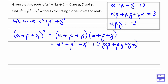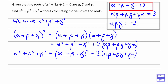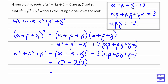And then we can rearrange this to make alpha squared plus beta squared plus gamma squared the subject. So alpha squared plus beta squared plus gamma squared is equal to (alpha plus beta plus gamma) squared, subtract 2 times (alpha-beta plus beta-gamma plus gamma-alpha). And you can see that that's really useful. We know alpha plus beta plus gamma is zero, so zero squared is zero. And then we've got minus two multiplying, and we know alpha-beta plus beta-gamma plus gamma-alpha is equal to three. So that gives us our answer: negative six.